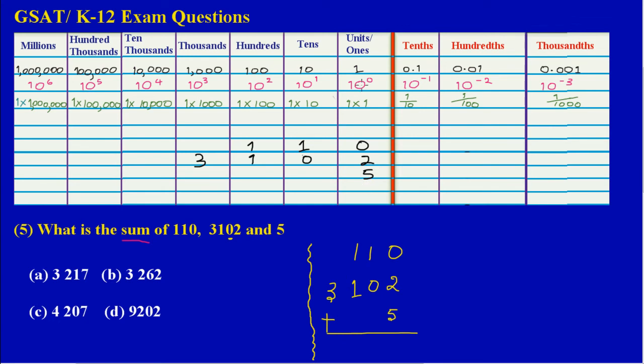In my tens column, I would have 1 plus 0, which will give me 1, so I carry down my 1 there. And in my hundreds column, I would have 1 plus 1, which will give me 2, so I put a 2 there.